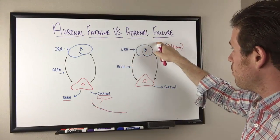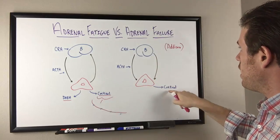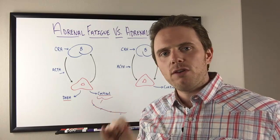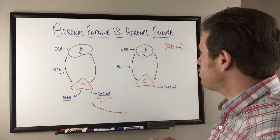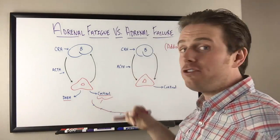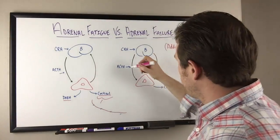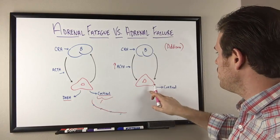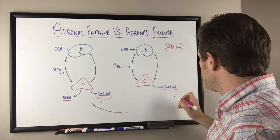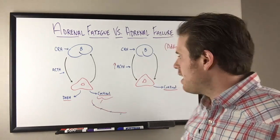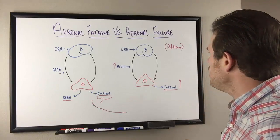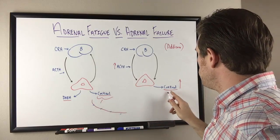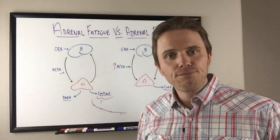When you go to your standard endocrinologist and they're ruling out adrenal failure or Addison's disease, they're typically giving you an ACTH stimulating compound. They'll increase ACTH and they're looking to see how the adrenals respond. They'll typically already have cortisol measured at baseline, give you this ACTH, and want to see if the cortisol goes up.